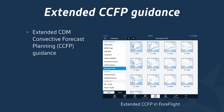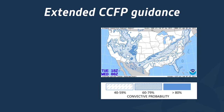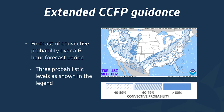We also added guidance for forecasting convection — the Extended CDM Convective Forecast Planning Guidance — an automated forecast for deep, moist convection. Not necessarily always thunderstorms, but for convective situations similar to thunderstorms, though lightning is not necessarily part of the criteria. Forecasts are available at six-hour time steps out to three days. It shows convective probability over a six-hour period at three levels: 80% for filled areas, 60–79% for heavily slashed areas, and 40–59% for lighter hatched areas.